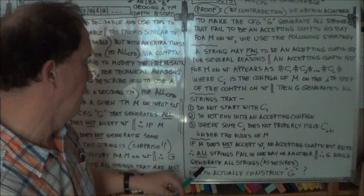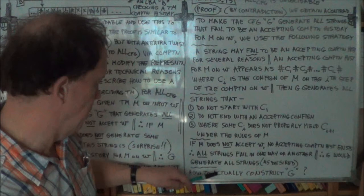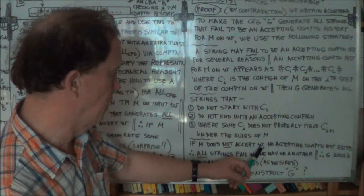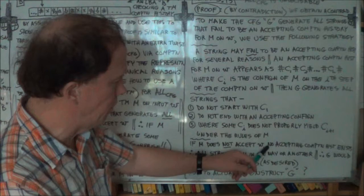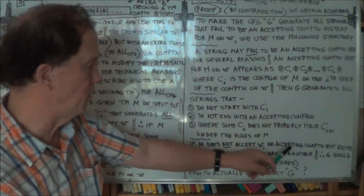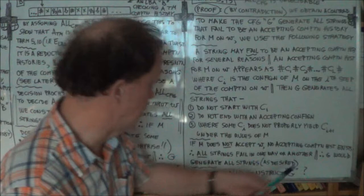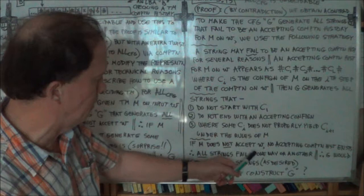Here's the core logic: if M does not accept W, then there's no accepting computation history — because an accepting computation history only exists when M does accept W. So if M does not accept W, there's no accepting computation history.